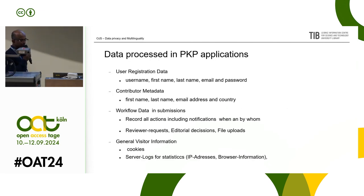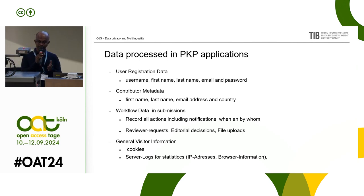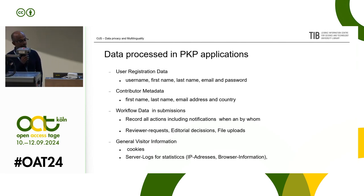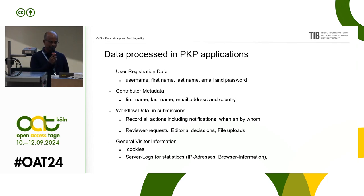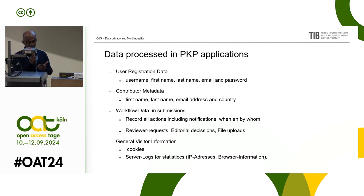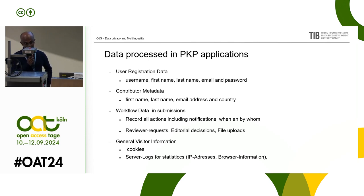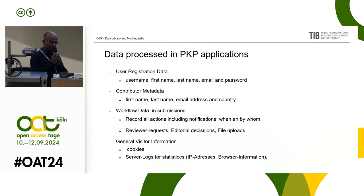What kind of data are we processing in our OJS systems? We have four kinds. First, user registration data: username, first name, last name, email, and password. Second, contributor metadata — practically author metadata — requiring first name, last name, email address, and country. Third, workflow data: due to the nature of our software, we record all actions happening in the system — practically even notifications we send, when and to whom, review requests, editorial decisions, and even file uploads; everything is recorded.